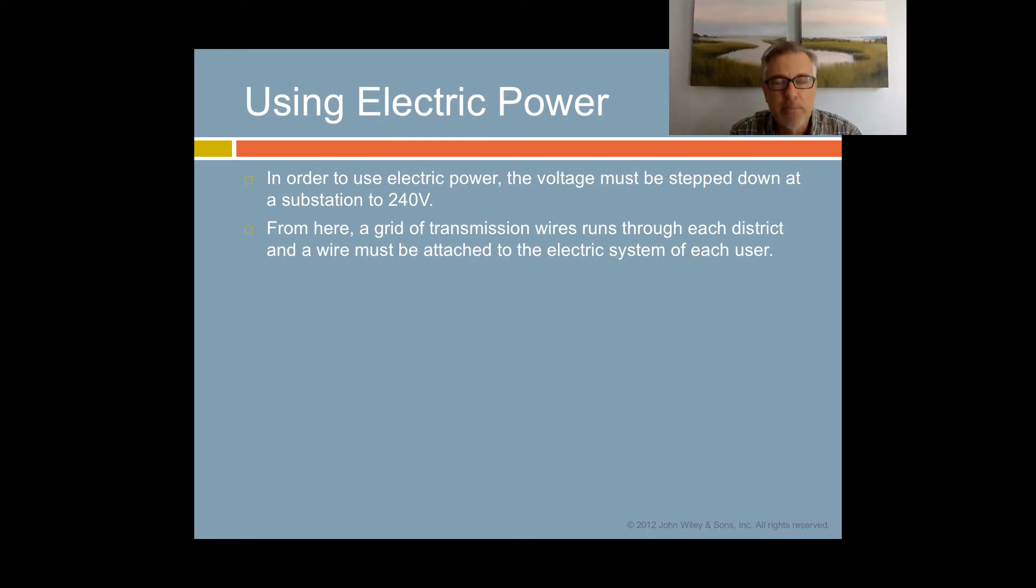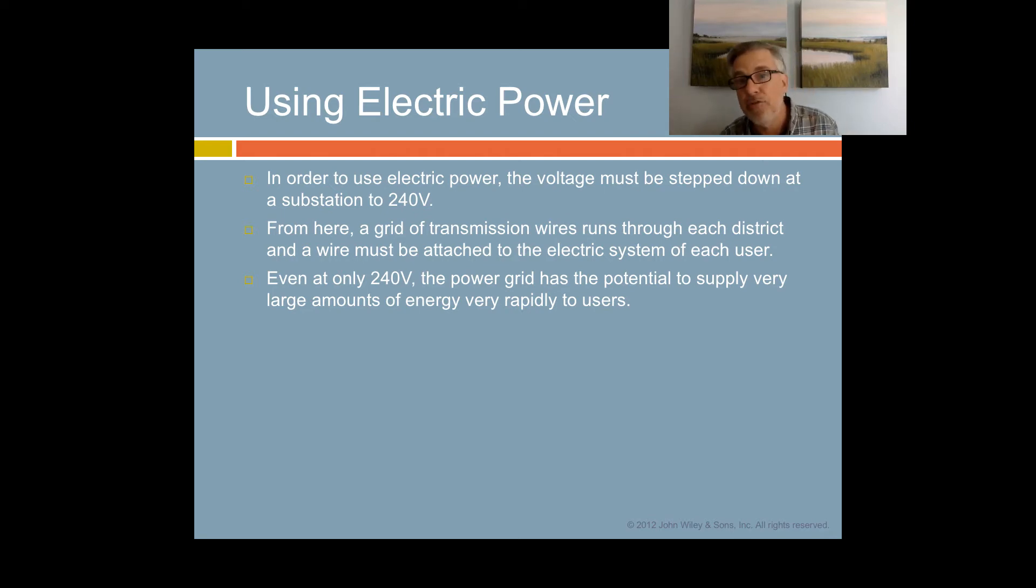From the substation that steps down the voltage, there is a grid of transmission wires that runs through each district, and a wire must be attached to the electric system of each user. So you have to have an electric connection coming into your house. Even at only 240 volts, the power grid has the potential to supply very large amounts of energy very rapidly to users.